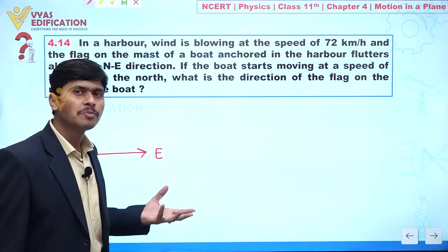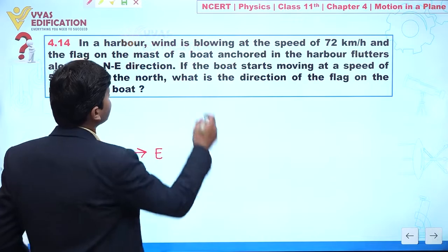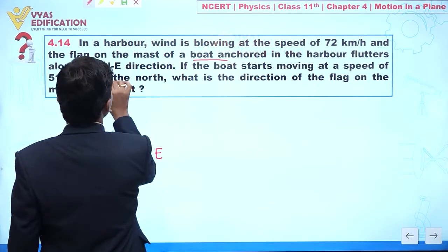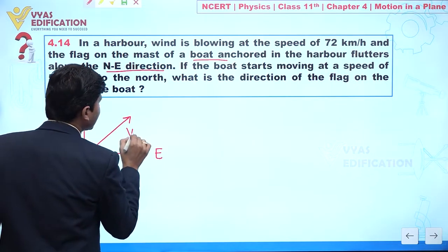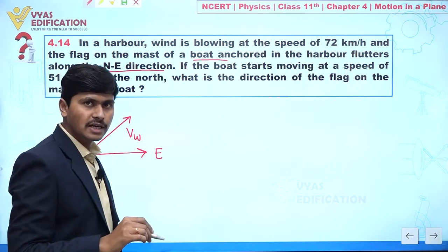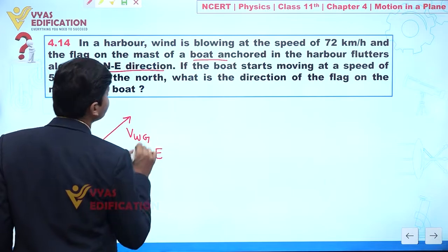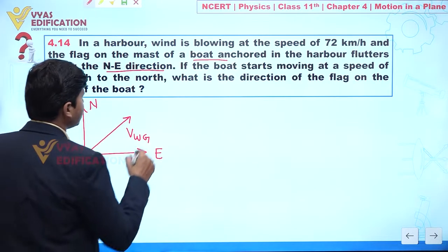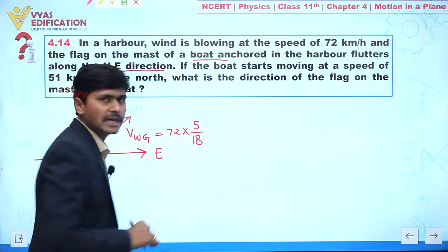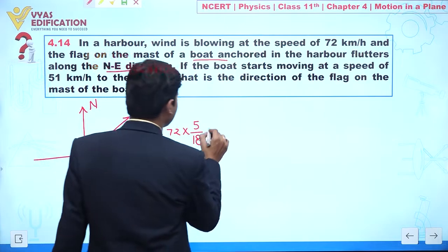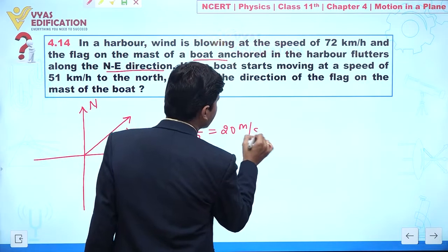Initially, assuming the boat is at rest, the flake is in the northeast direction. This means what is given to us is the velocity of the wind — with respect to the boat, but since the boat is at rest, this is the velocity of wind with respect to ground. This is 72 km/h, which we convert to meter per second by multiplying by 5/18, giving us 20 meters per second.